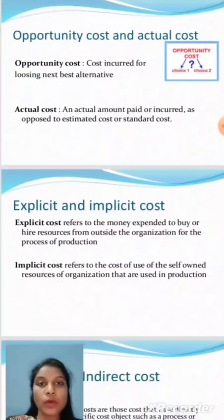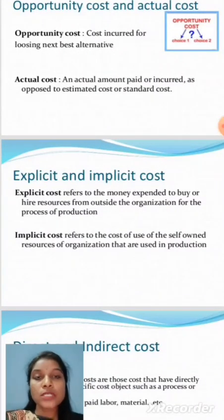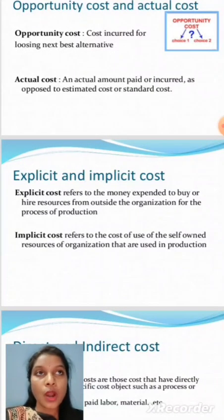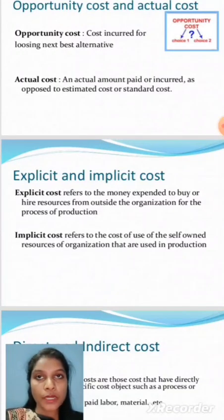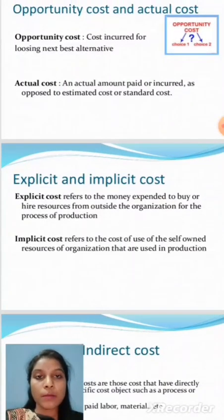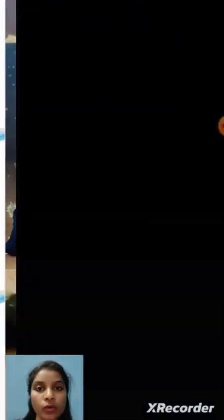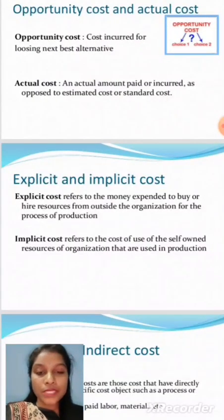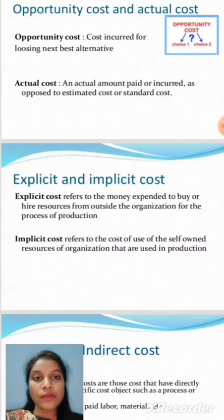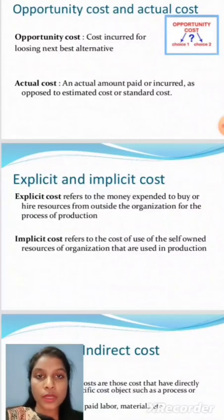Let us discuss opportunity cost and actual cost. Opportunity cost is the cost incurred for losing the next best alternative. We will be having several alternatives, and out of those we have to pick one that is best suitable for our business purpose. For example, several suppliers produce the same raw material at similar prices, and we must choose the best one. This selection process is called opportunity cost.